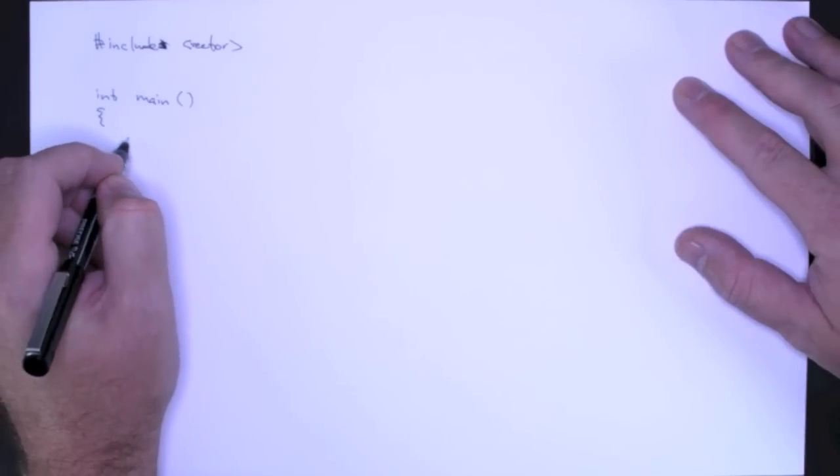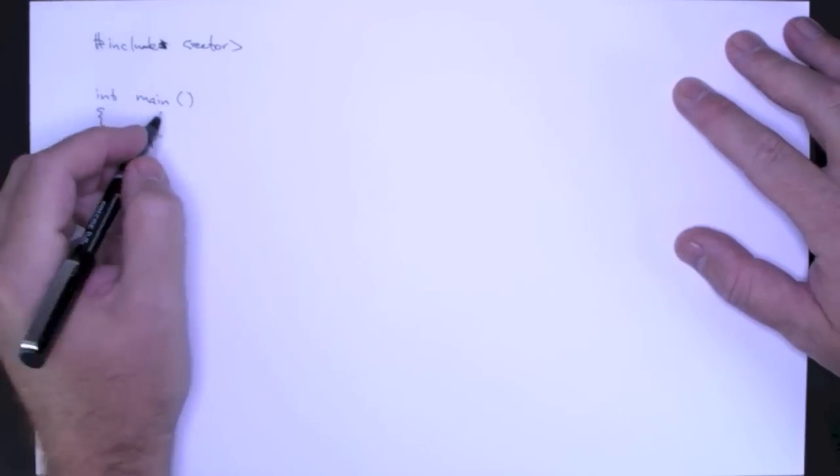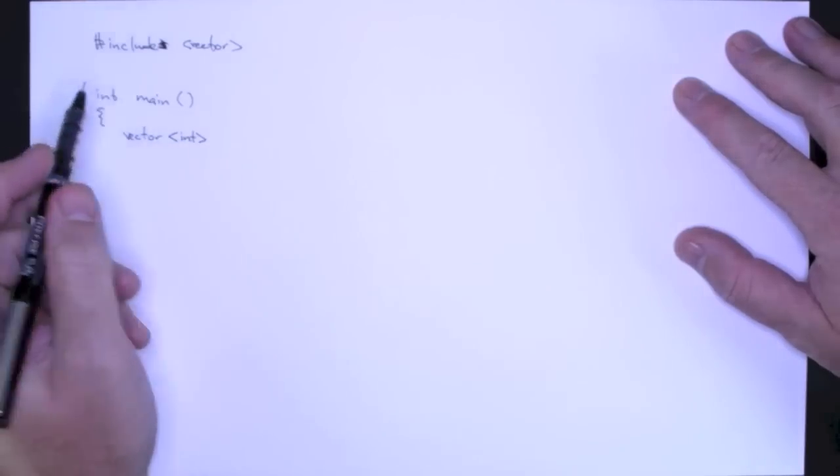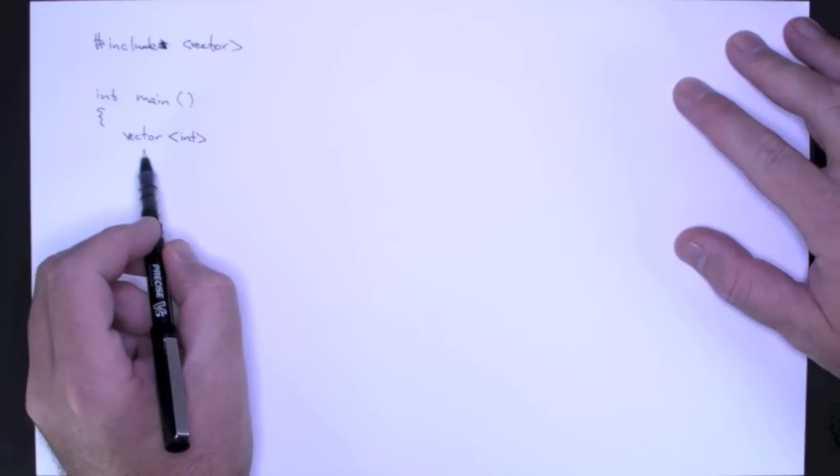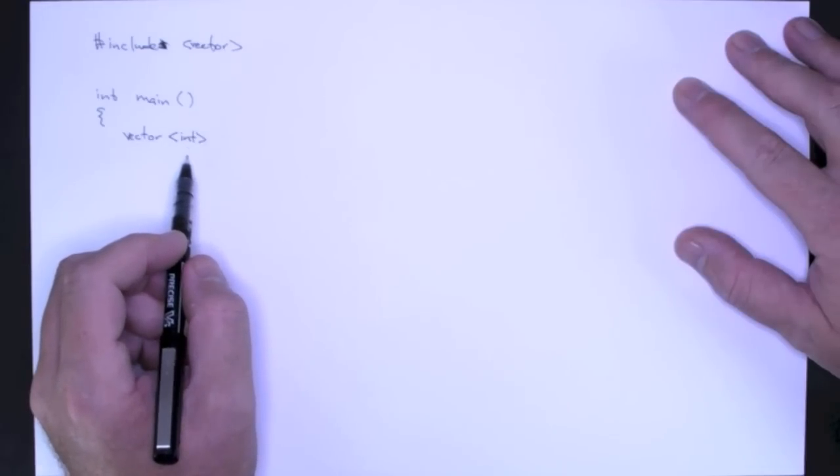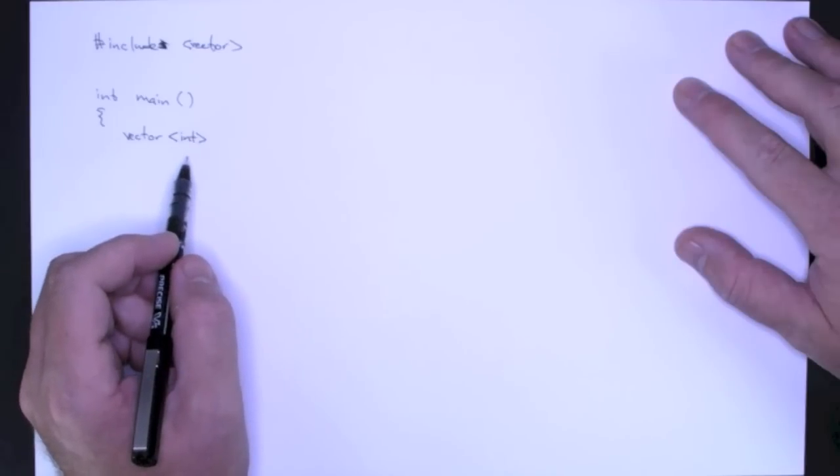So to do this, I create, so we start off with the type, and then I use the angle brackets to specify the type of object that the vector can store. And in this case, it will be an integer, and only an integer.